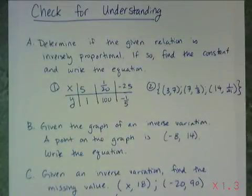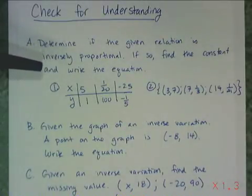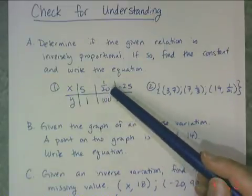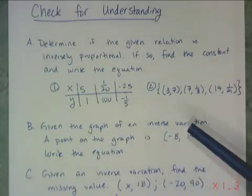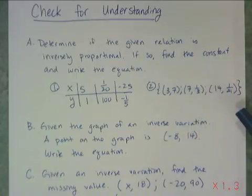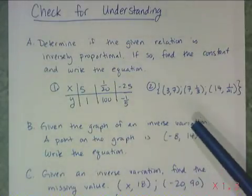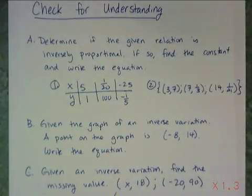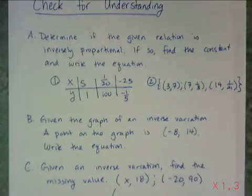Now to check your understanding: come to class with these answered. First, determine if the given relation is inversely proportional; if so, find the constant and write the equation. The table has x values 5, 1/20, negative 25 with corresponding y values 1, 100, negative 1/5. The second relation is the ordered pairs (3, 7), (7, 1/3), and (14, 1/21). Then, given an inverse variation graph with point (negative 8, 14), write the equation. Finally, given an inverse variation with points (x, 18) and (negative 20, 90), find the missing x value.